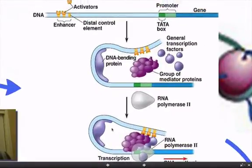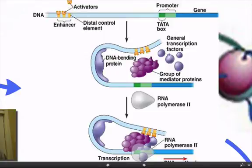These activators will cause the whole gene to become active — they bond to the enhancer region as control elements of the enhancer region. The DNA bending protein then bends that around.